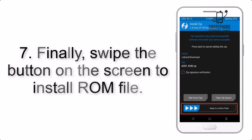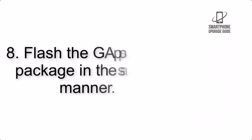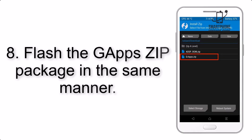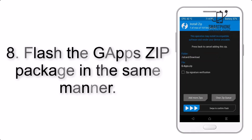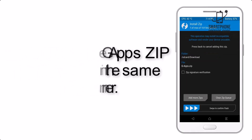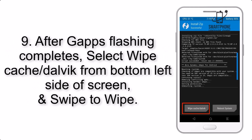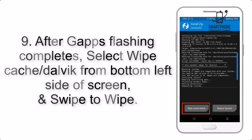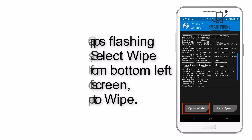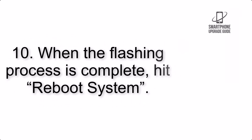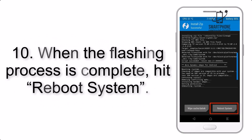Step 8: Flash the GApps zip package in the same manner. Step 9: After GApps flashing completes, select Wipe Cache and Dalvik from the bottom left side of the screen and swipe to wipe. Step 10: When the flashing process is complete, hit Reboot System.